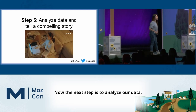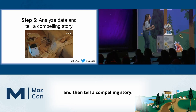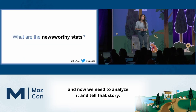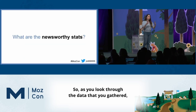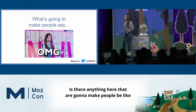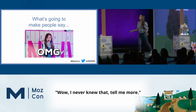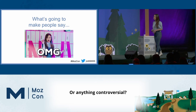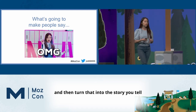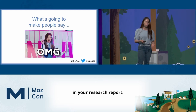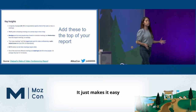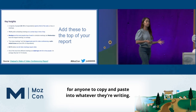Now the next step is to analyze our data and then tell a compelling story. We have gathered our data and now we need to analyze it and tell that story. As you look through the data that you gathered, ask yourself: what here is newsworthy? Is there anything that's going to make people say, 'Wow, I never knew that — tell me more,' or anything controversial? You want to pull these data points and turn that into the story you tell in your research report. And you also want to add these points at the very top of your report — it just makes it easy for anyone to copy and paste into whatever they're writing.